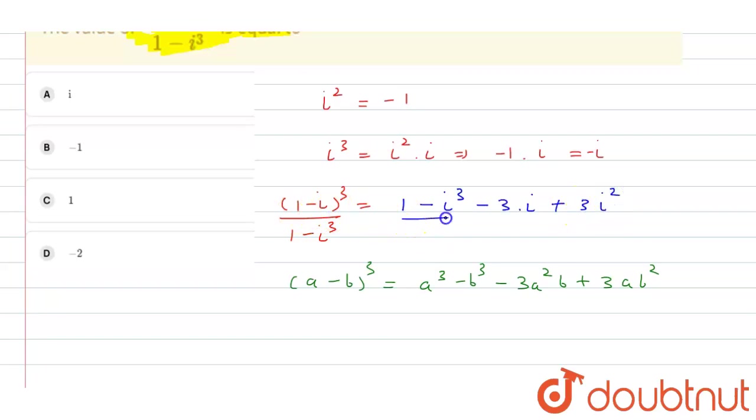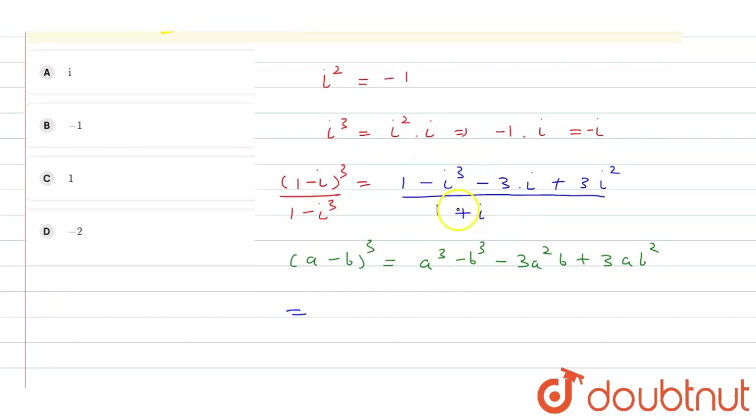Iota cube is equal to minus iota, so minus into minus iota is plus iota. Now solve this further: 1 minus iota cube is minus iota, so minus minus plus iota minus 3 iota, and iota square is minus 1.